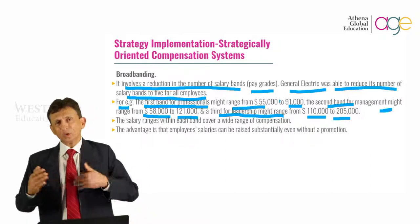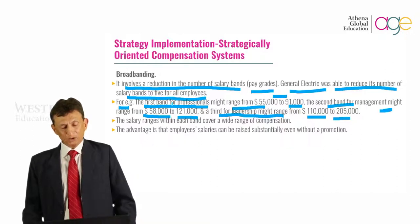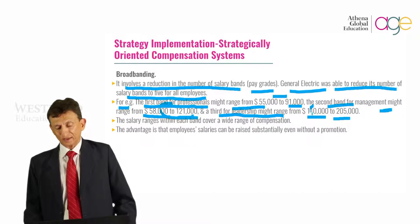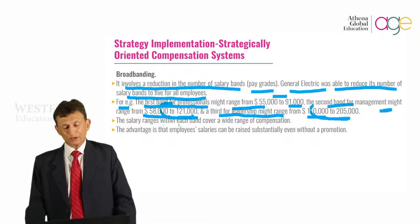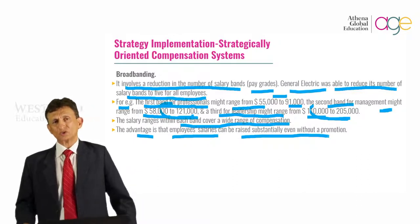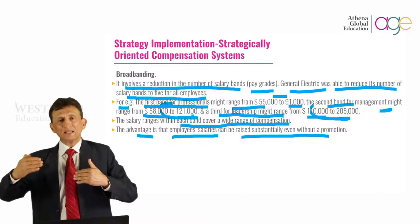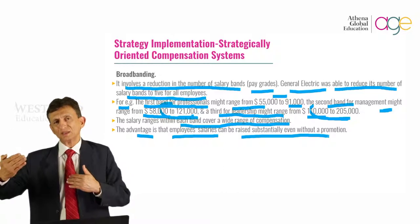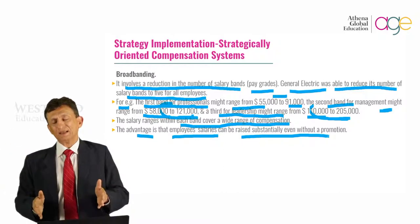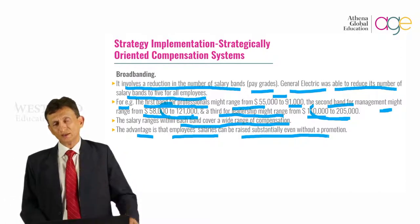If you look at these bands, there is an overlap of salaries within them — the range from $55,000 to $91,000 overlaps with the next band and so on. The salary ranges within each band cover a wide range of compensation. The advantage is that employee salaries can be raised substantially even without a promotion. Companies can have grades within the same band and still keep increasing salaries for employees who are doing good work.